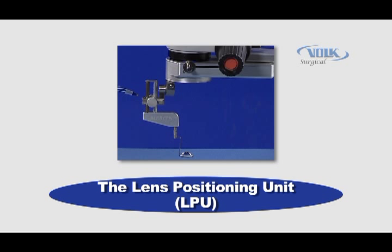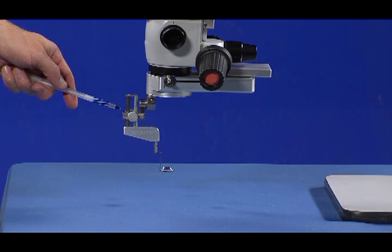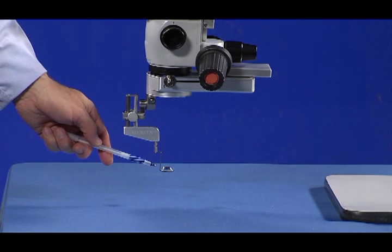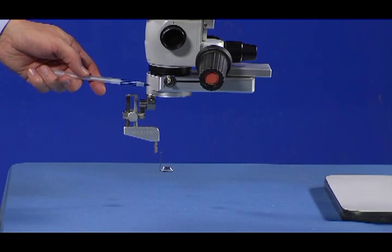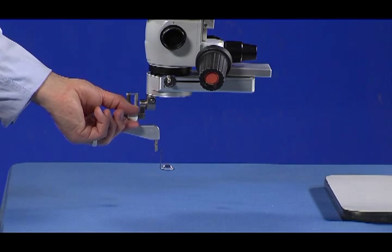The lens positioning unit, or LPU, is the next component in the system. The LPU has two main functions: one, to suspend the surgical lens over the patient's eye when viewing the retina; two, to adjust the focus of the retinal image when viewing the retina.